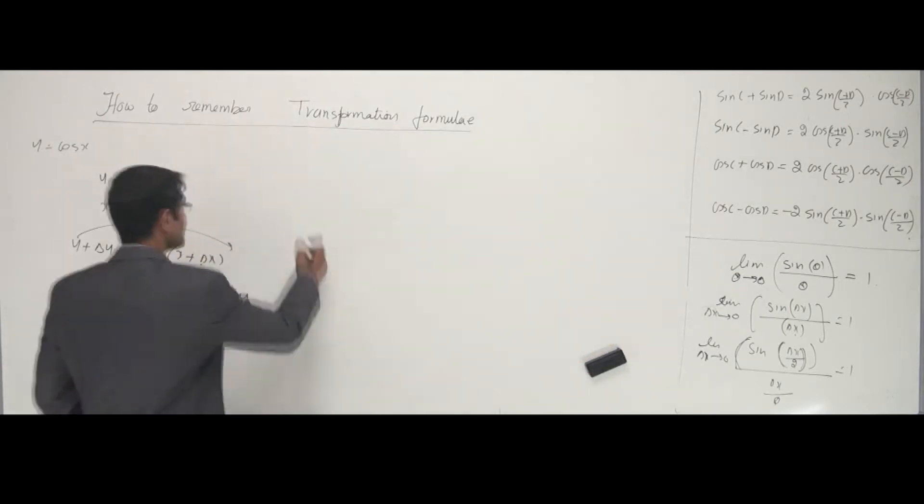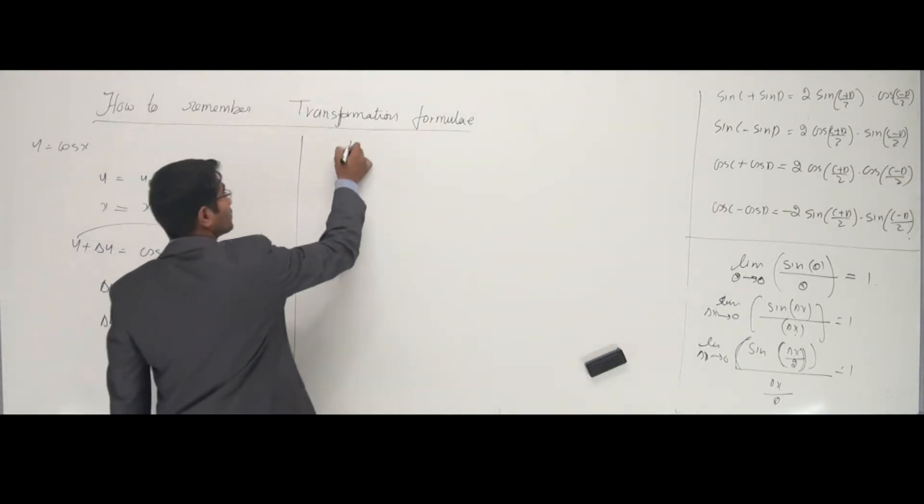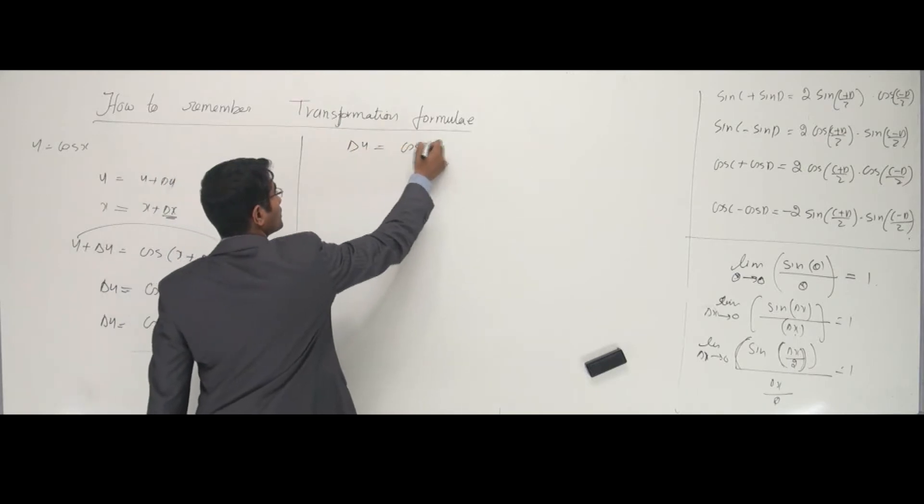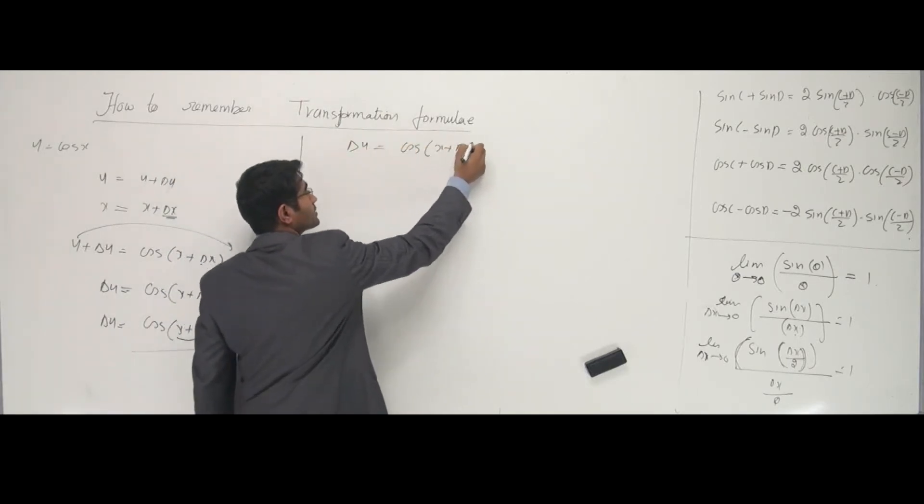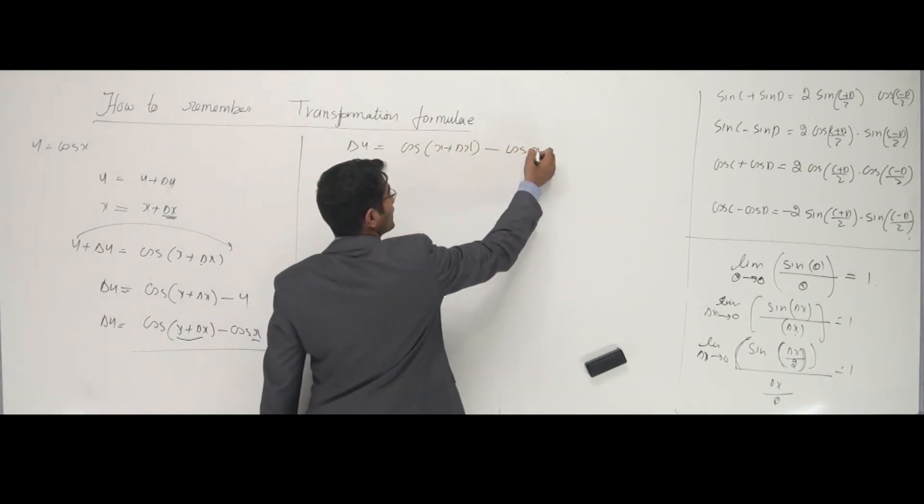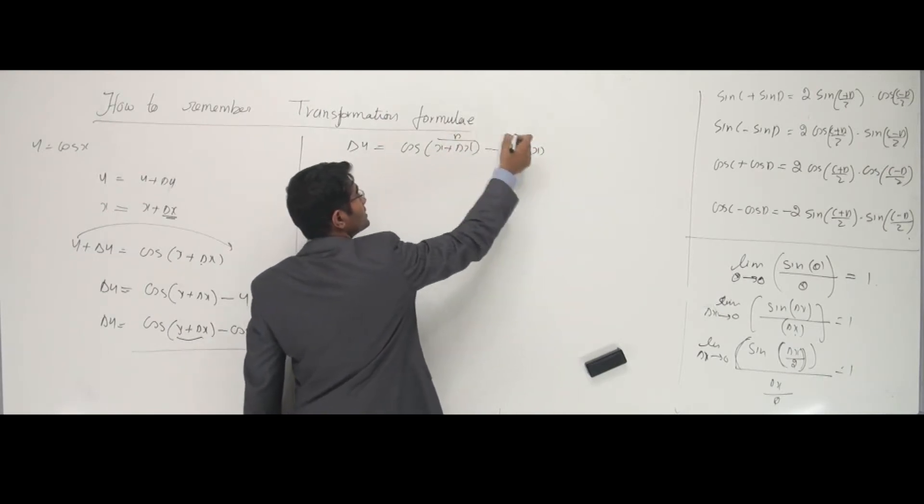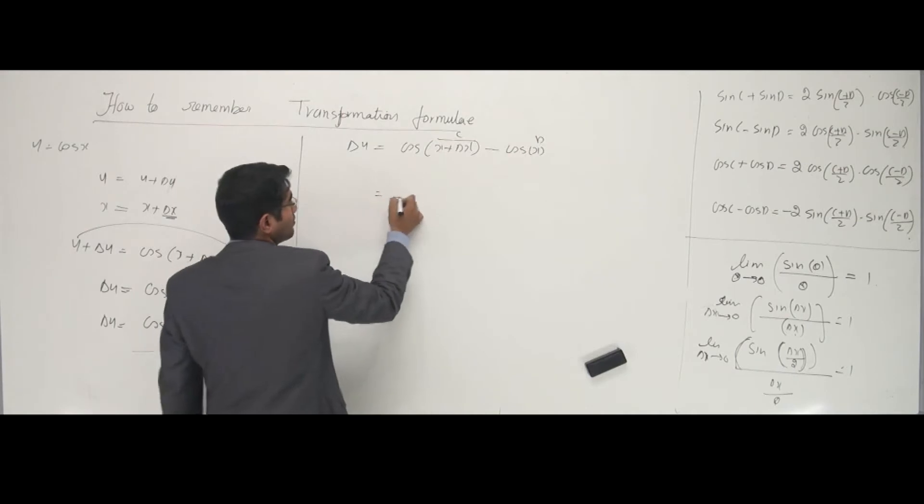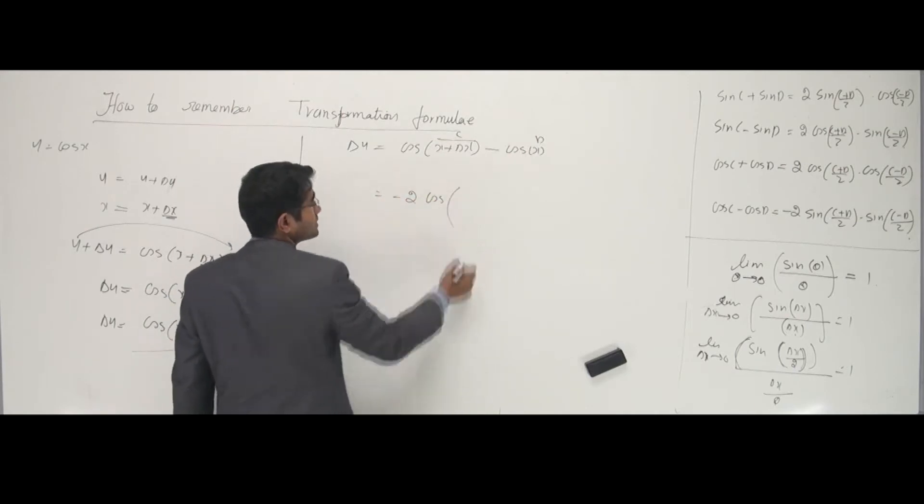So can I use that formula? Yes. Delta y equals cos of x plus delta x minus cos of x. I'll take this as C and this as D, so we get minus 2 sine C plus D by 2.